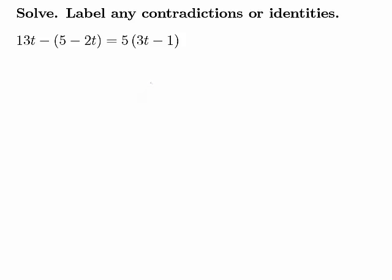So we'll solve this equation for t, and the first step will be to clear parentheses using the distributive property. We have our first term, 13t, and now we'll distribute this negative sign through. So negative 1 times positive 5 is negative 5, and negative 1 times negative 2t is a positive 2t.